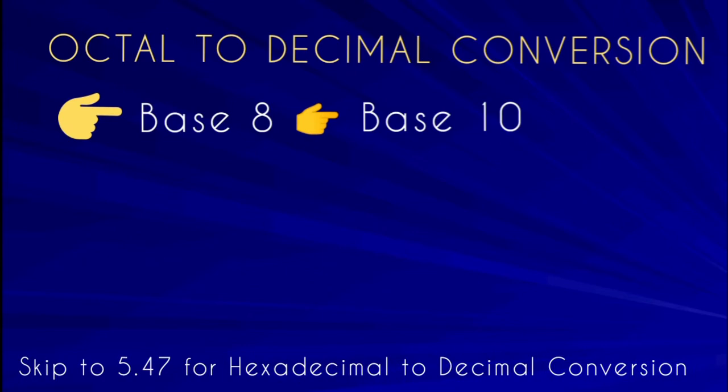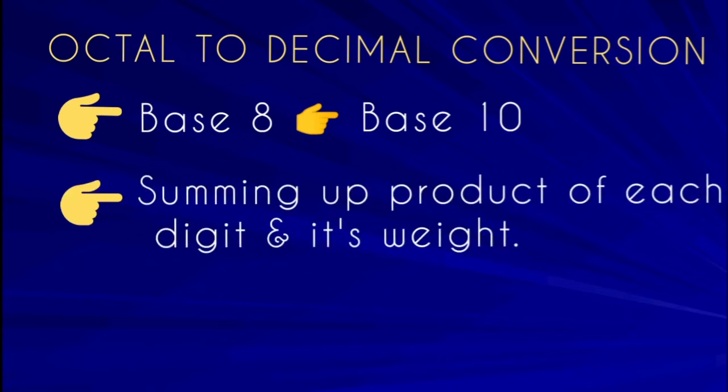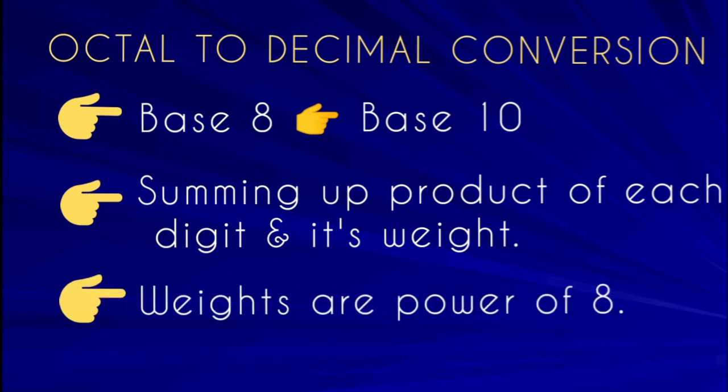Octal is called Base 8. To convert an octal number to a decimal number (Base 10), we multiply each digit by its weight. The weights are powers of 8: 8 raise to 0, 8 raise to 1, 8 raise to 2, and so on.